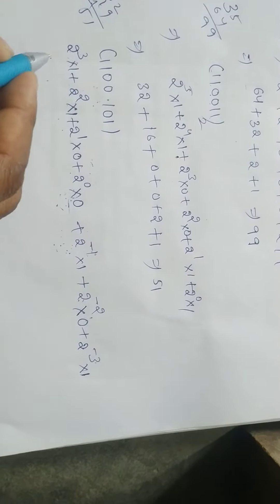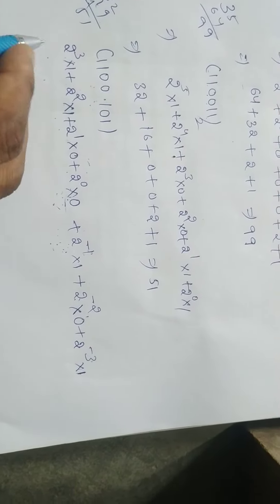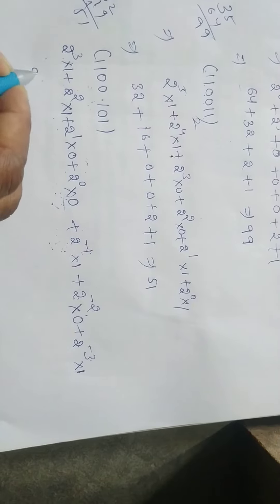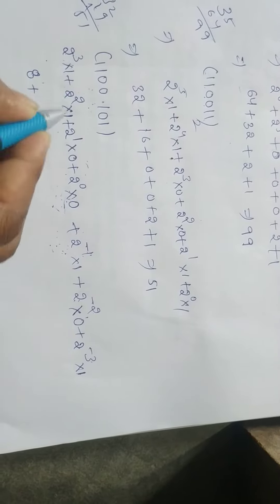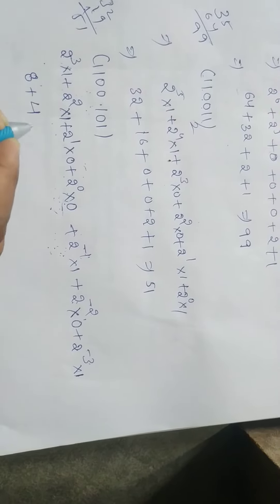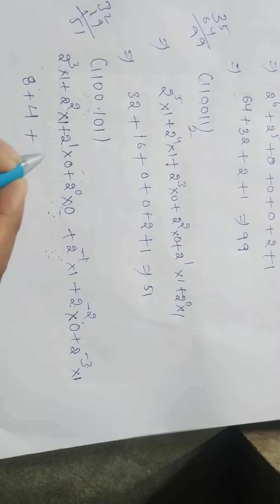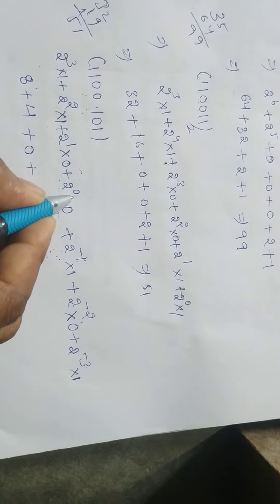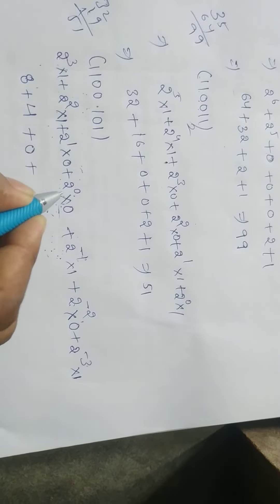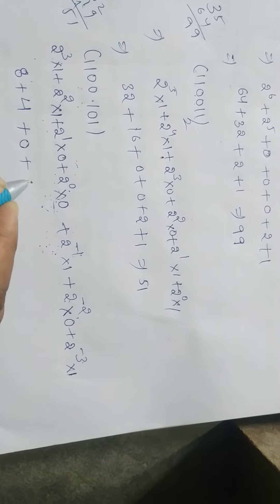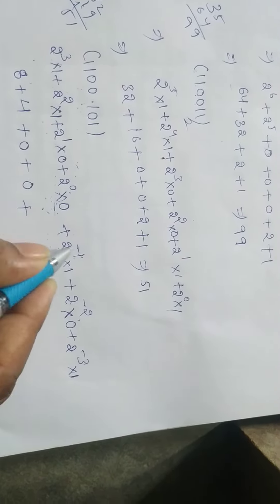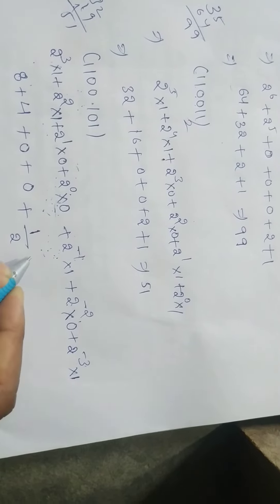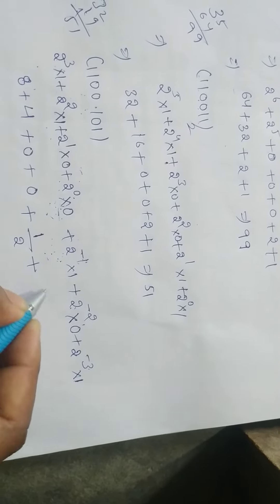Now calculating: two power three means two into two into two, which equals eight. Two power two equals four. Two power one into zero is zero. Two power zero into zero is zero — since two power zero means one, and one into zero is zero.